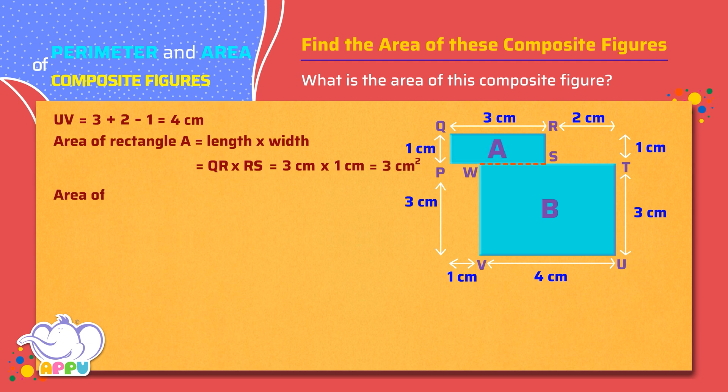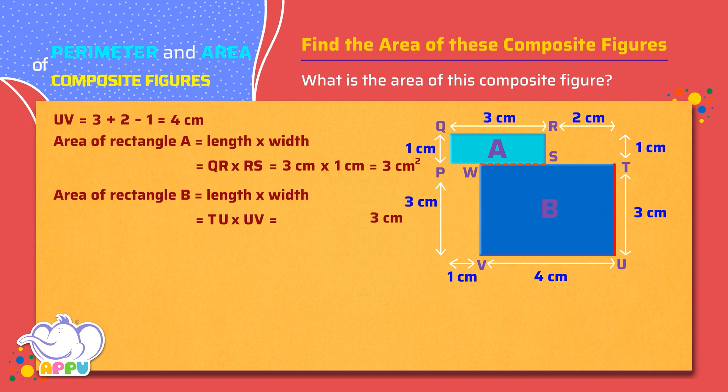Area of Rectangle B equals Length times Width equals TU times UV equals 3 centimeters times 4 centimeters equals 12 square centimeters.